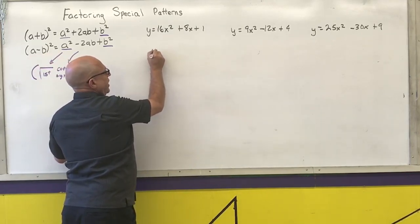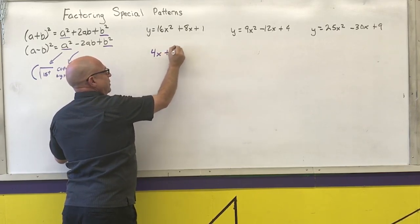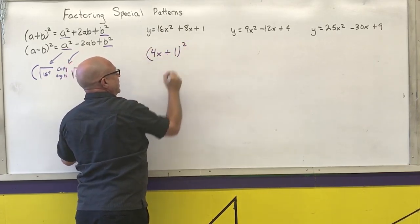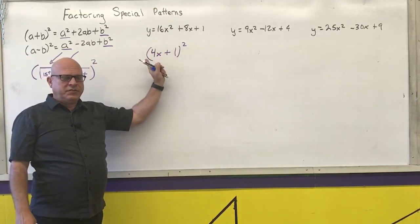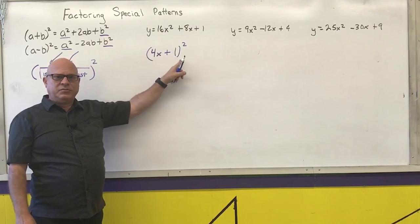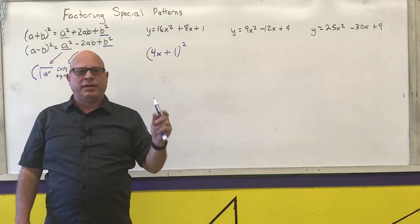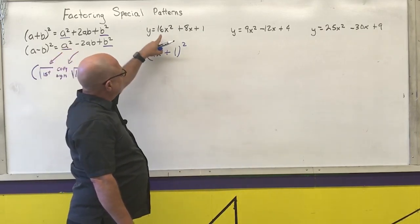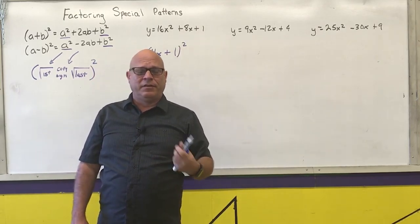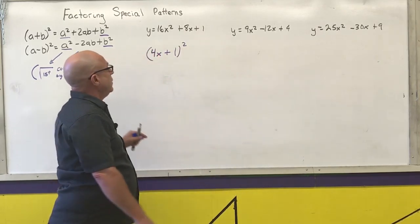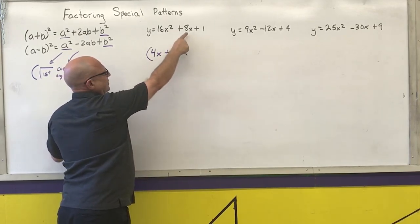Square root of the first is 4x, square root of the last is 1, copy the plus sign — all squared: (4x + 1)². You should remember that a binomial squared is a trinomial: the first term squared, the last term squared, and the middle term is two times the product. You need to go back and make sure it's two times the product. Two times 1 is 2, times 4x is 8x — it does check.